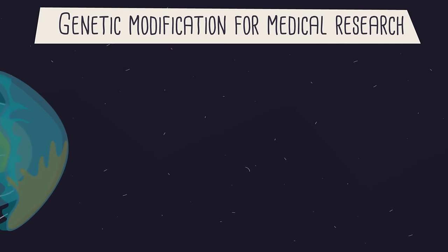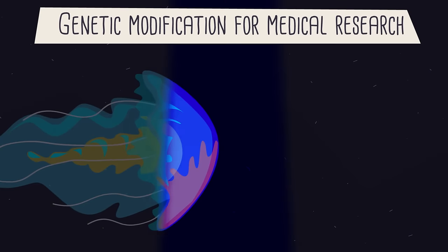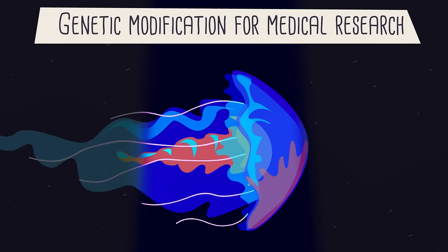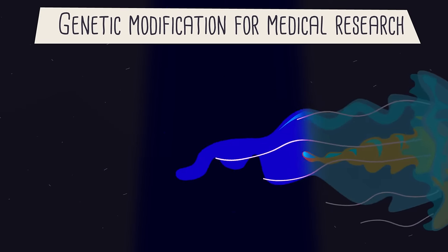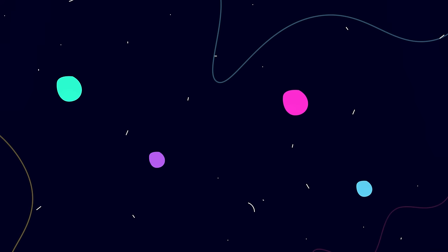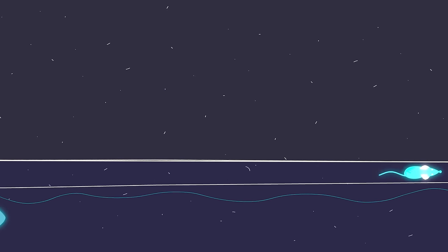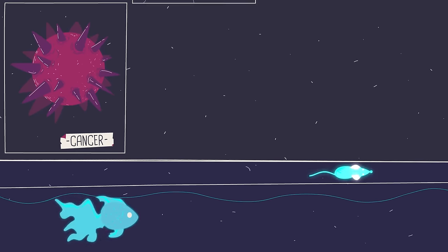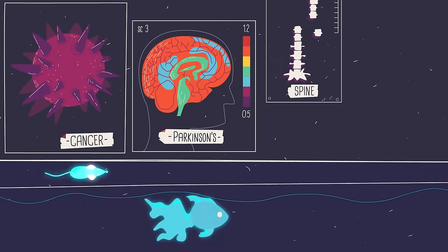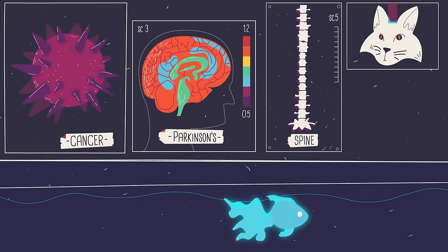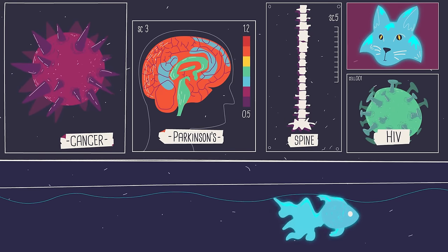Scientists have used genetic modification to introduce genes that glow under UV light — such as from jellyfish — into other animals for medical research. This may seem totally useless, but being able to see certain cells in the dark has led to a lot of scientific discoveries. Glow-in-the-dark mice and fish have helped scientists make breakthrough research into treating cancer, Parkinson's, and spinal cord injuries. And glow-in-the-dark cats have been used for HIV research.